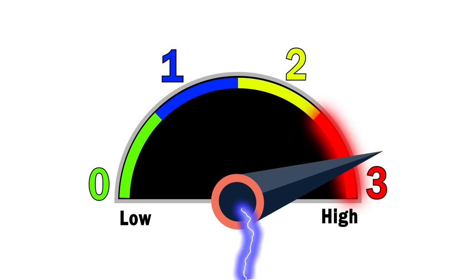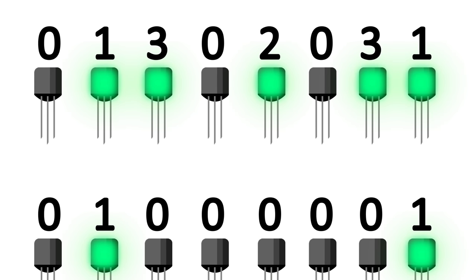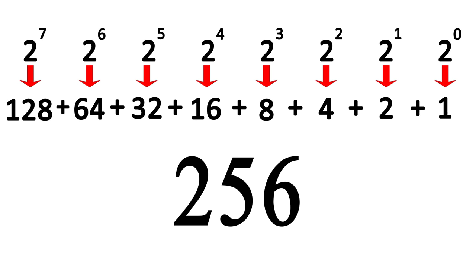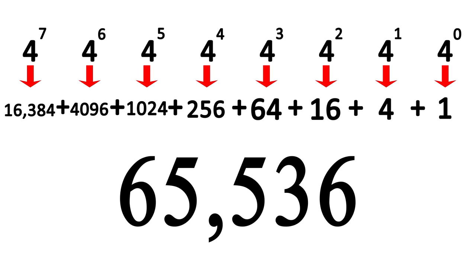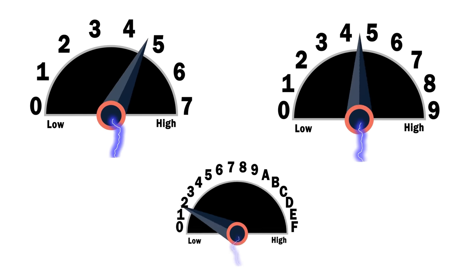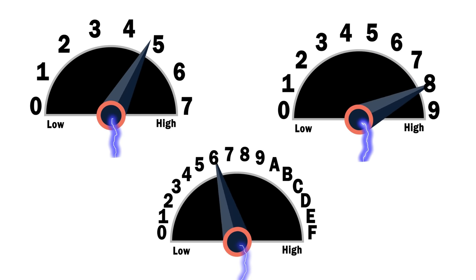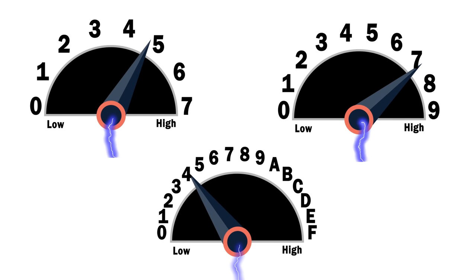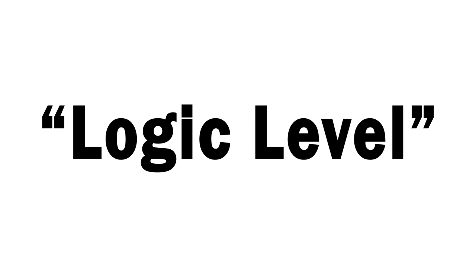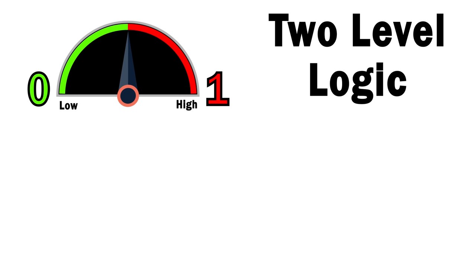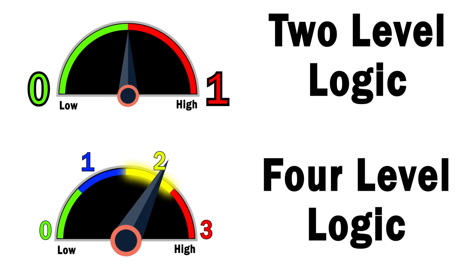With that method, each individual cell could have four states, meaning each byte of data could be a number designed around base 4 instead of base 2. Where a byte of eight transistors could have 256 values with base 2, our new system could let us have 65,536 values with base 4. And what if each cell could represent eight, ten, or sixteen different states? The amount of states a single cell of information can hold is referred to as a logic level — binary is called two-level logic, and the four-state version would be known as four-level logic. The fundamental problem with using logic levels greater than two is reliability.